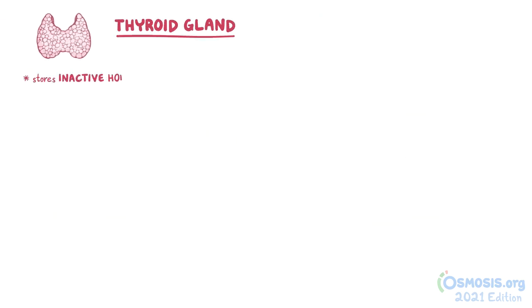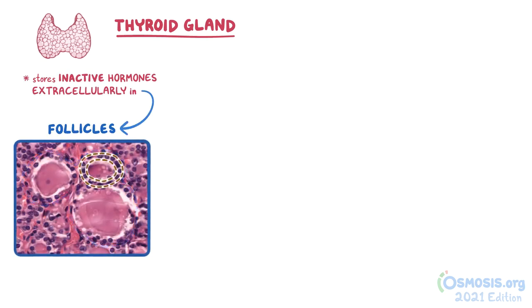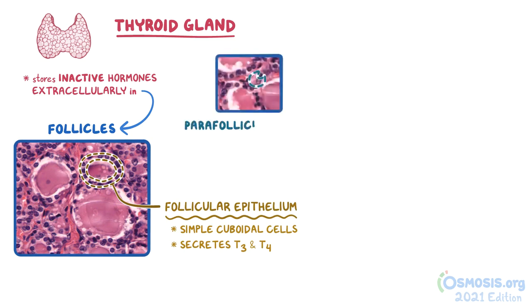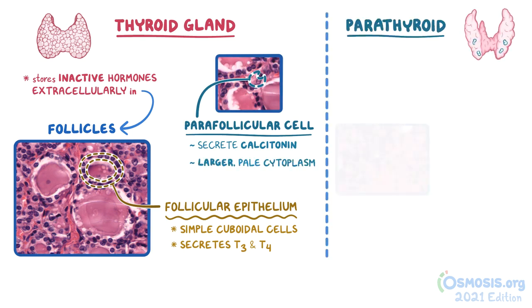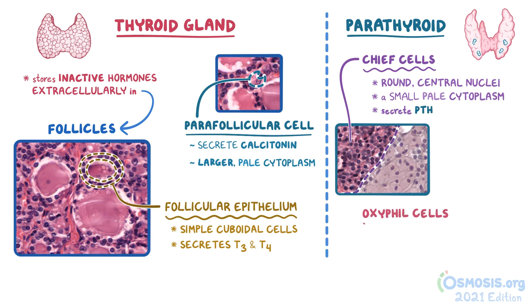As a quick recap: the thyroid is unique because it stores inactive hormones extracellularly in colloid follicles that stain pink with H&E. The follicular epithelial cells are simple cuboidal cells responsible for secreting T3 and T4 when needed. The parafollicular cells, or C cells, secrete calcitonin and have a larger, pale cytoplasm. The parathyroid consists mostly of glandular chief cells with round central nuclei and a small, pale cytoplasm — the only cells that secrete PTH. The oxyphil cells are noticeably bigger due to their larger eosinophilic cytoplasm.